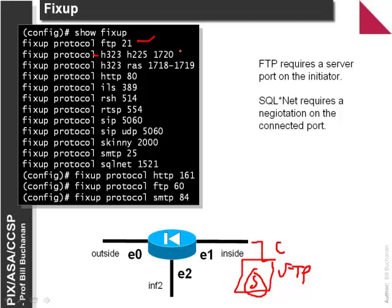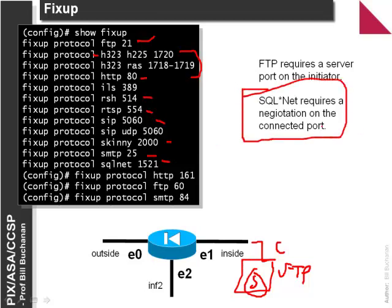Other fixup protocols include H.323 for video conferencing, HTTP, RSH, RTSP, SIP, Skinny, SMTP, and SQL. SQL*Net typically requires a negotiation for the port. These are typically defined by default, but if we need to redefine the port in which they operate, we can redefine the fixup to be, for example, HTTP port 161, FTP port 60, and SMTP port 84.